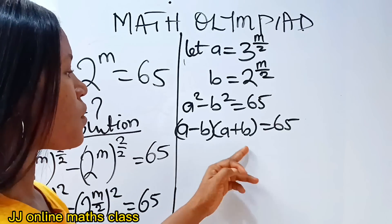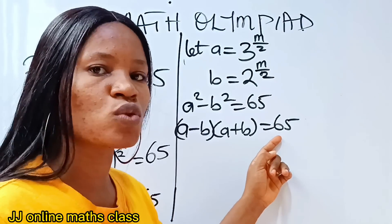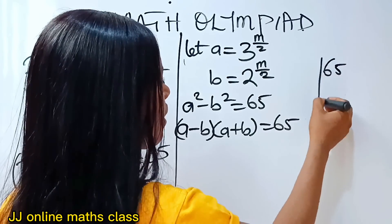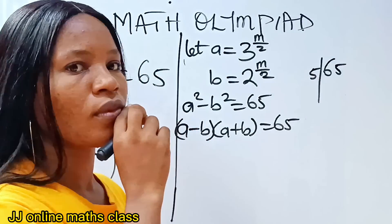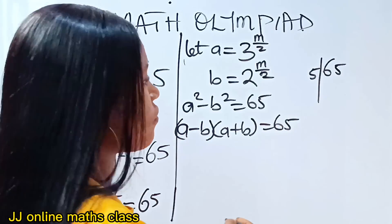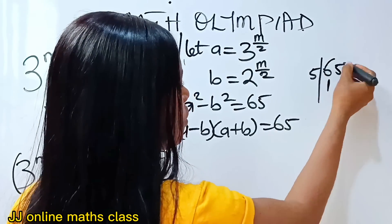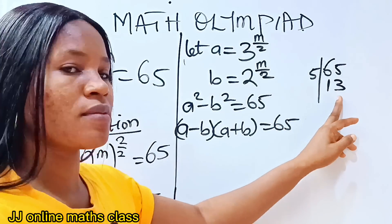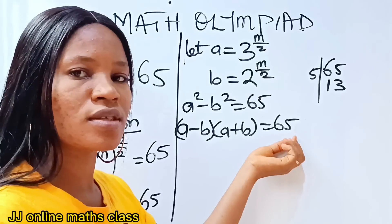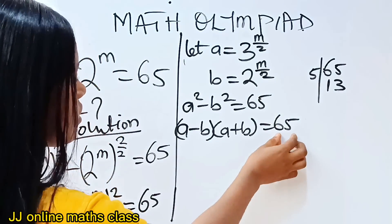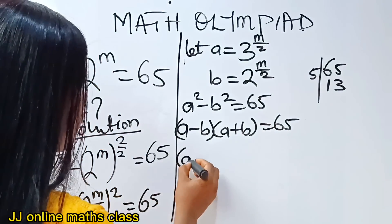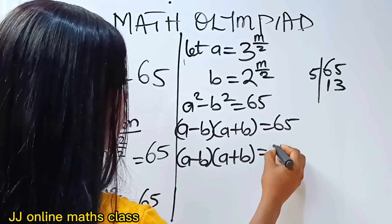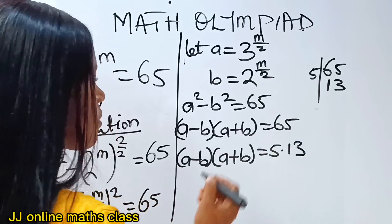So what do we do next? That means we can confidently say that (a minus b)(a plus b) is equal to 65. We have two factors here, so let's split 65 into two as well. If we divide 65 by 5 we get 13, so 5 times 13 equals 65. Let's represent 65 as that: (a minus b)(a plus b) is equal to 5 times 13.